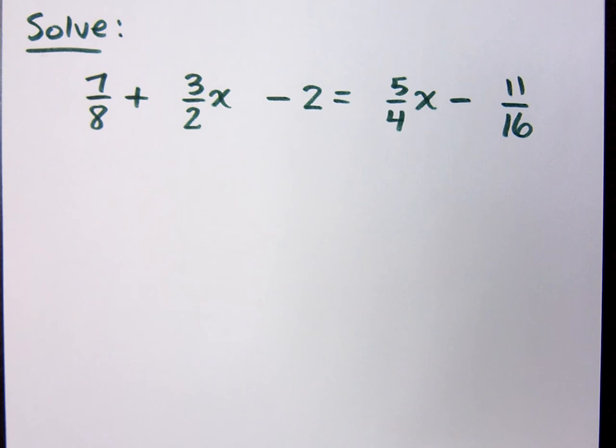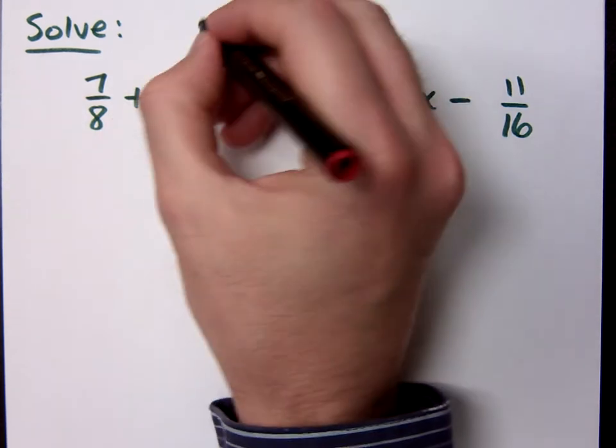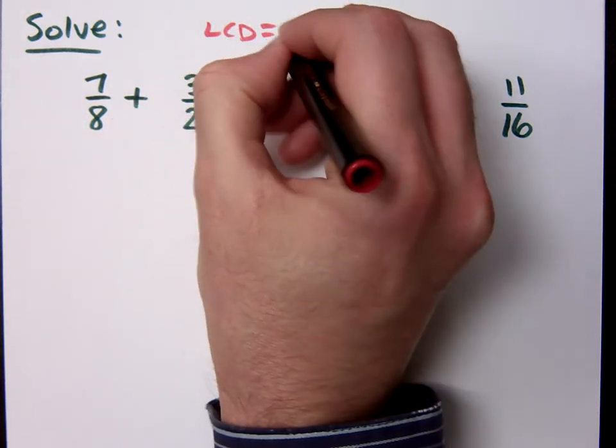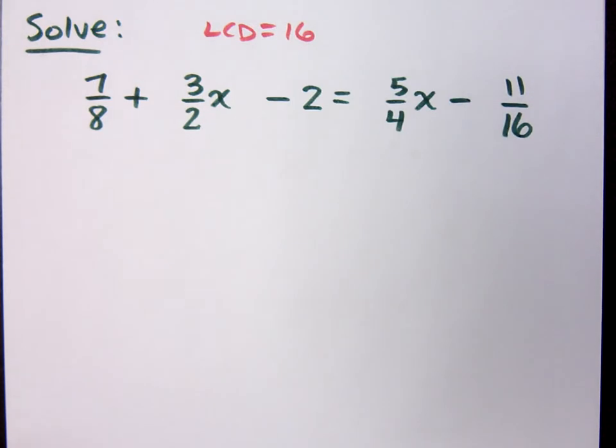Now, can you guys identify the LCD here? Oh, I made it easy for you, didn't I? I guess I should make the problem more difficult next time. The LCD equals 16, so that means I'm going to multiply everything times 16.